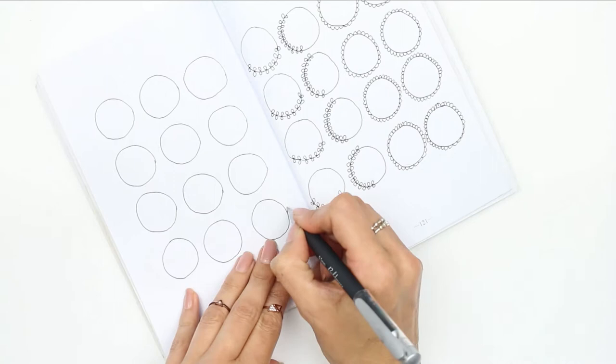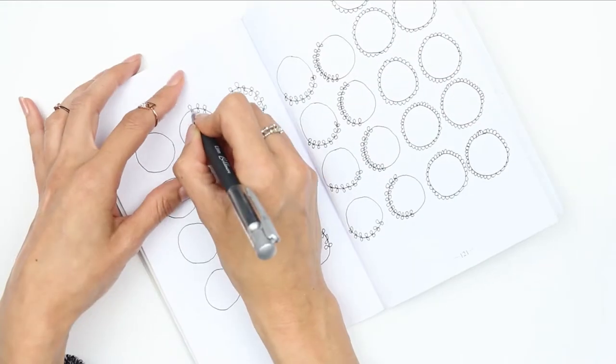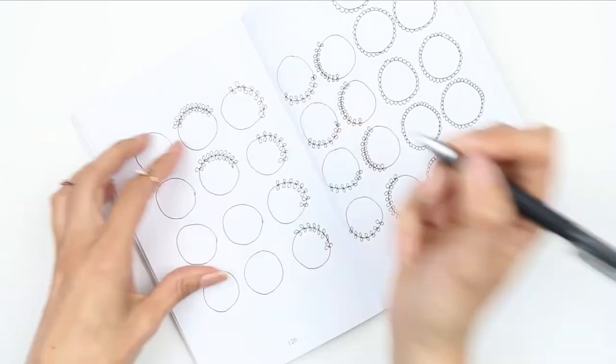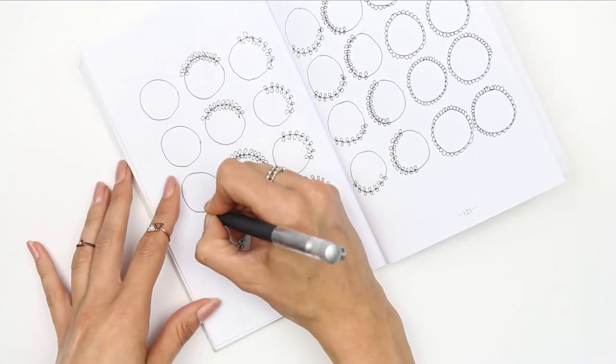For the weekend I drew little flower petals just around the weekend so I can visually see which days are Saturday and Sunday, and then for the other days of the week I just drew little leaves on different parts of the circle.